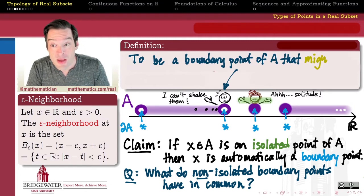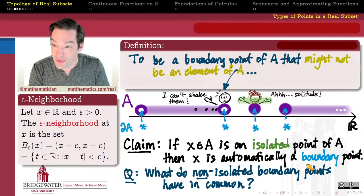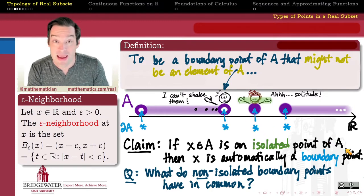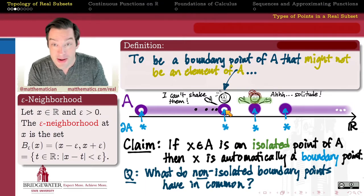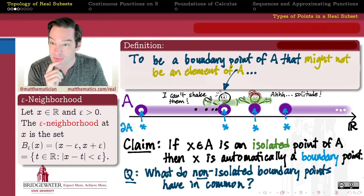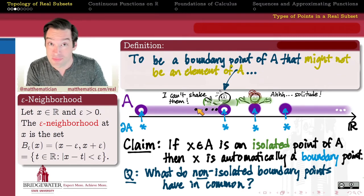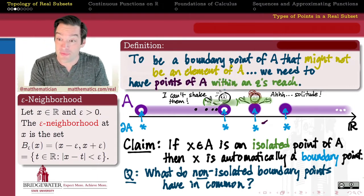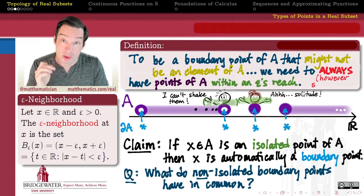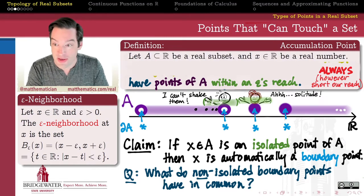How do we qualitatively describe the different kinds of boundary points? To be a boundary point of A that might not be an element of A, we need to have points of A within an epsilon's reach no matter how short our epsilon arms happen to be. And if we are one of those points, then we're going to call ourselves an accumulation point of the set A.